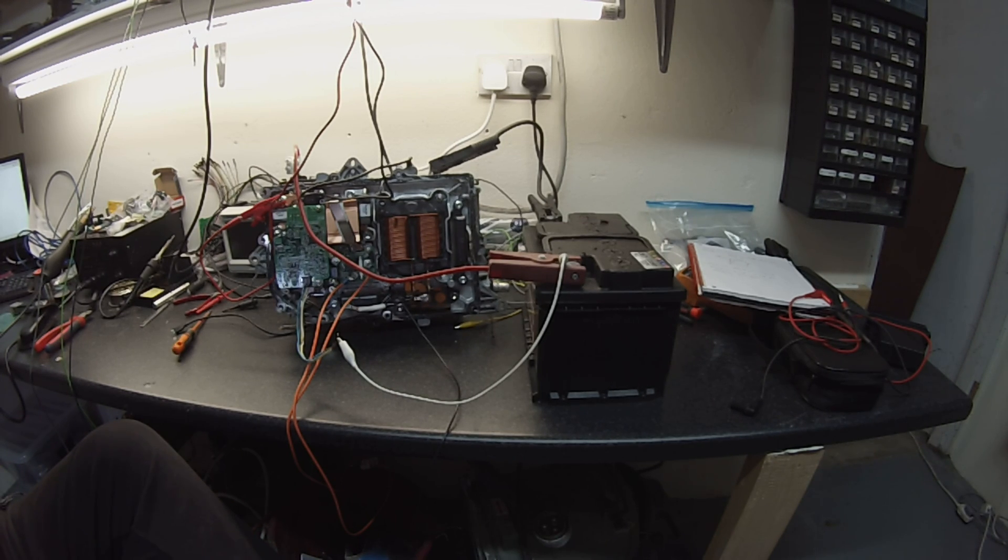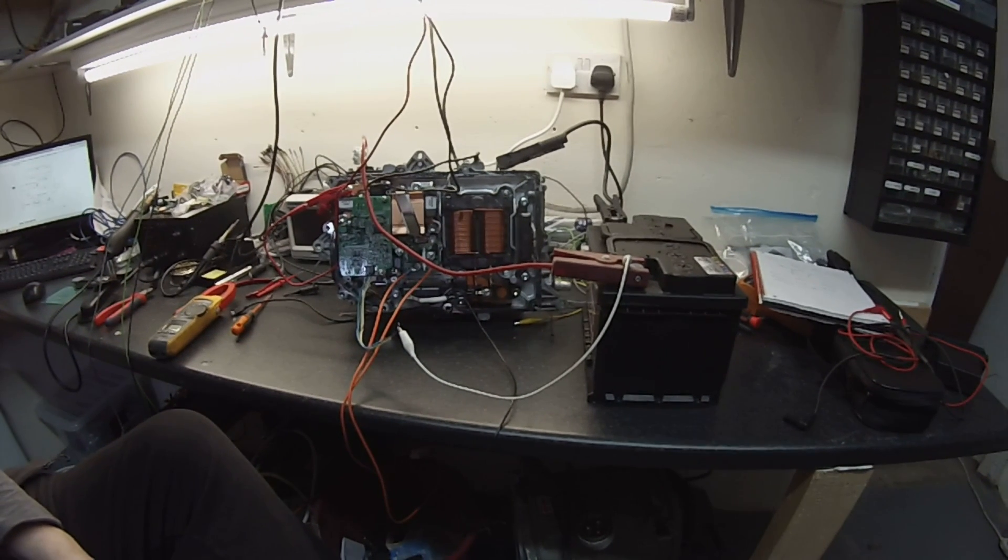So that is our Prius Gen3 DC to DC converter working just straight away like that giving us 14.2 volts which is perfectly fine even in a basic standalone mode and this converter is capable of I think slightly over 100 amps of 12 volt power. So very useful feature now and we've pretty much got this thing working.